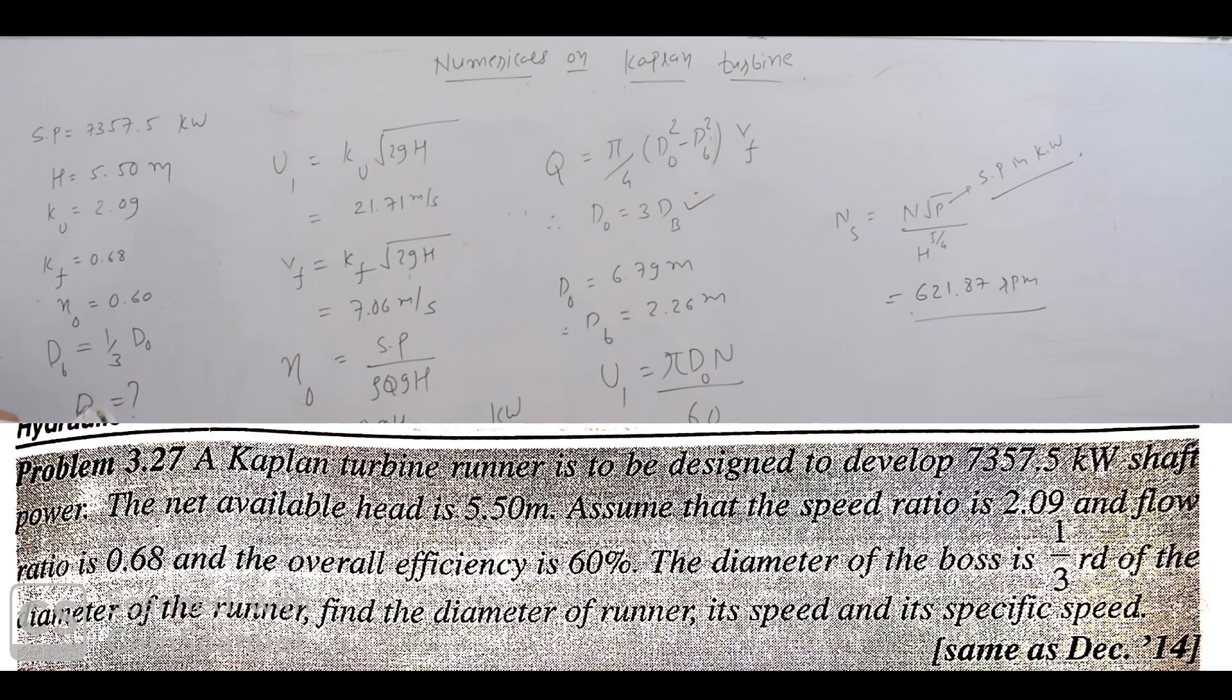A Kaplan Turbine Runner is to be designed to develop 7357.5 kW shaft power. The net available head H is 5.50 m. Assume that the speed ratio Ku is 2.09 and the flow ratio Kf is 0.68, and the overall efficiency is 60%.